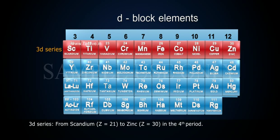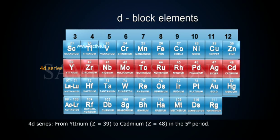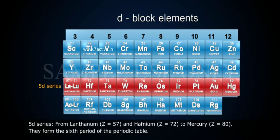From Scandium (Z = 21) to Zinc (Z = 30) in the 4th period. They form the 6th period of the periodic table.